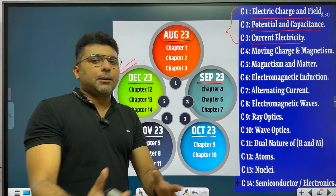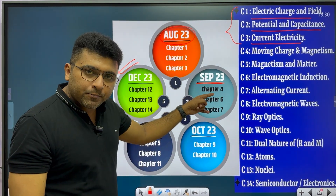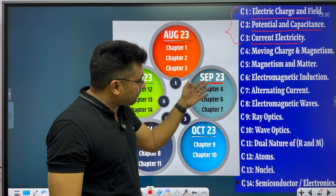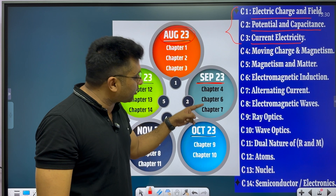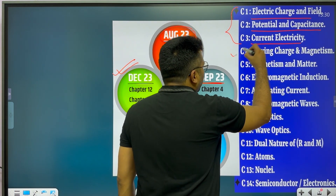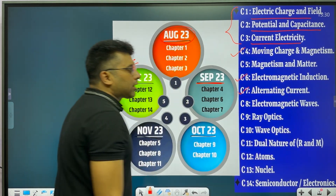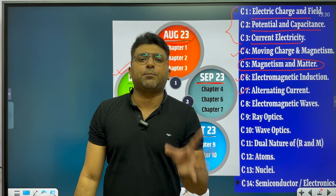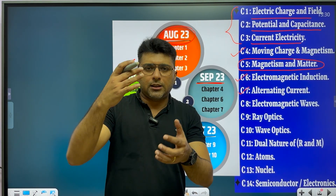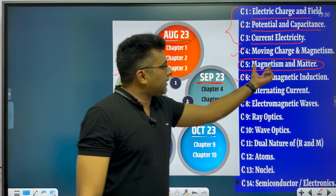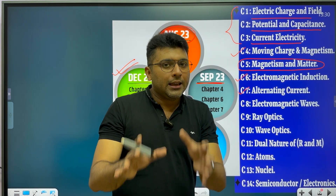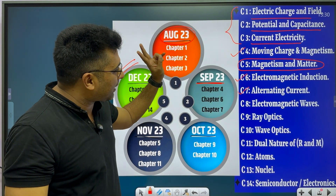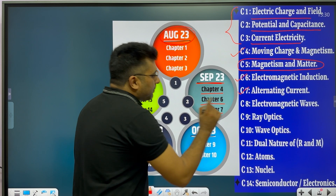Next, in September, we will do Chapter 4, Chapter 6, and Chapter 7. Chapter 5 is a theory chapter, so we are skipping it for September and placing it later. Many of us know that CBSE and Assam Higher Secondary Education Council, following NCERT, have authorized these chapters. I am starting with the conceptual chapters first. So in September: Chapter 4, Chapter 6, and Chapter 7.